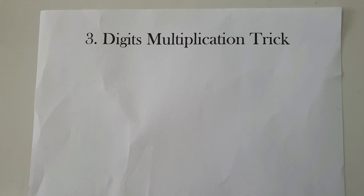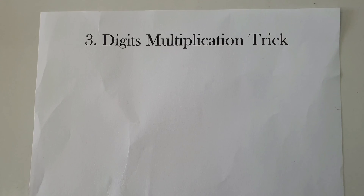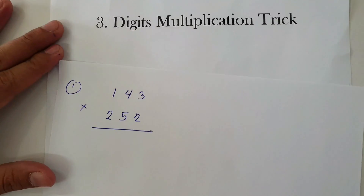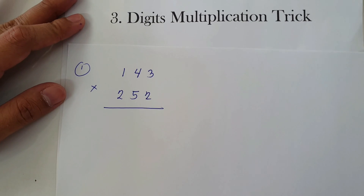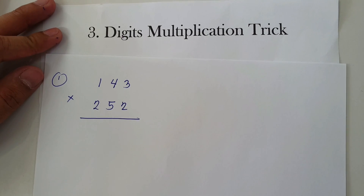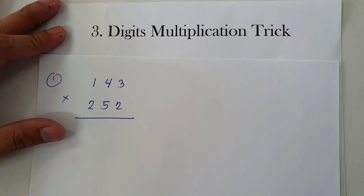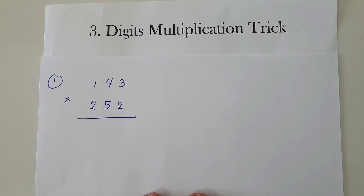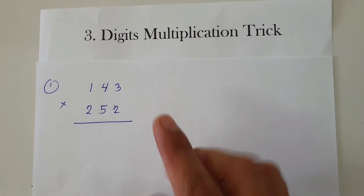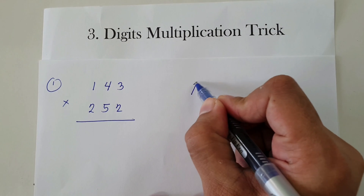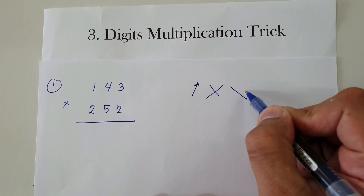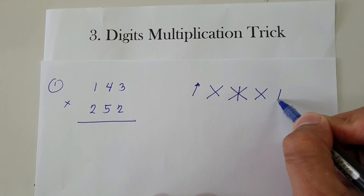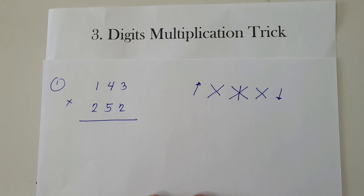Welcome to another video. In this video I'm going to show you the different tricks in multiplying three-digit numbers. Let's start with number one: 143 × 252. This technique is applicable in multiplying any three-digit number by another three-digit number. We're going to use the method: up, cross, crossbar, cross, then down.